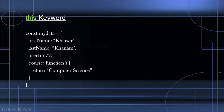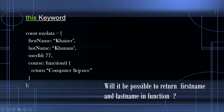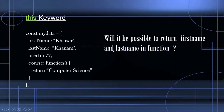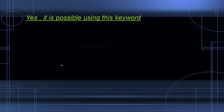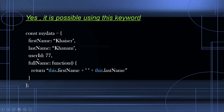We have seen about this keyword. Here I am having an object and inside this I am having one method called course, and this course method is returning computer science. Now, will it be possible to return first name and last name inside the function? Yes, we have already seen in plenty of examples — using this keyword we can easily return this first name and this last name. We are having plenty of things outside the object, but when we write this, this keyword is referring to the object, and whatever values we have here we can get using dot firstName and dot lastName.